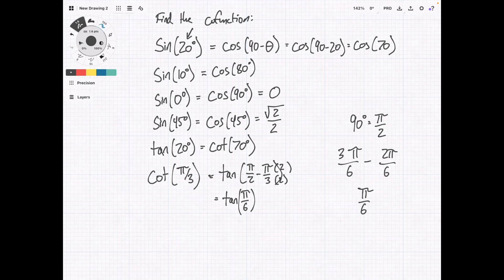We can do the same thing for the more rare functions. So secant of 42 degrees is going to equal the cosecant of 48 degrees.